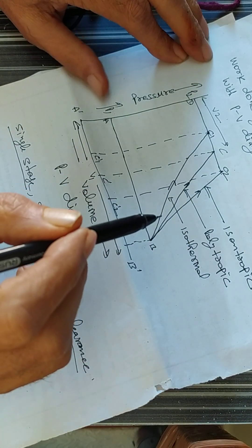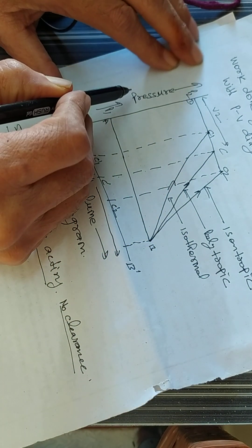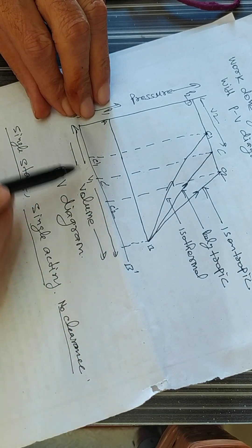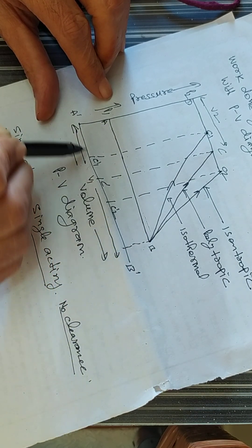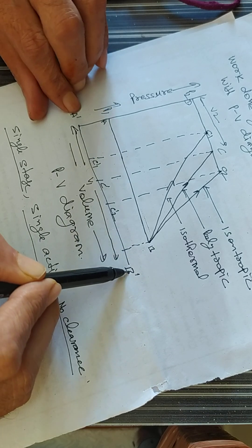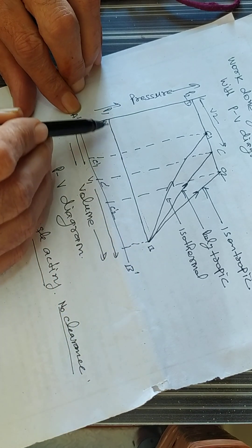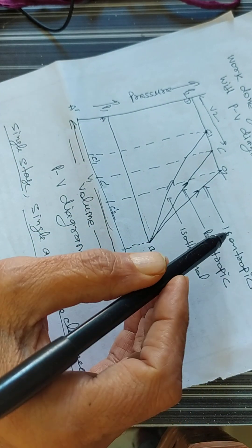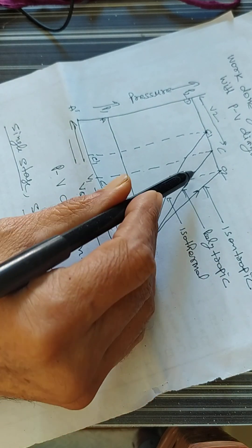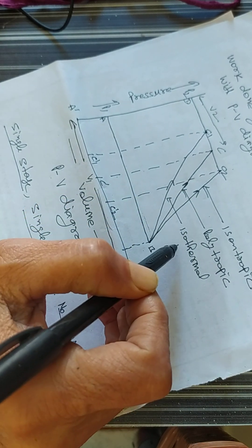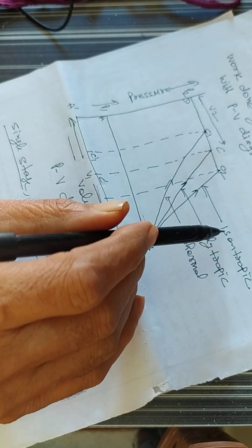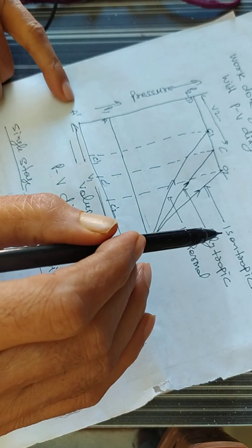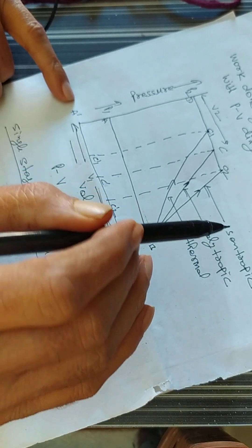This is the PV diagram in which the vertical axis is pressure and the horizontal axis is volume. This is the suction volume of the compressor. There are three processes: number one, isentropic process; number two, polytropic process; number three, isothermal process. We will calculate the work done in each of these processes.